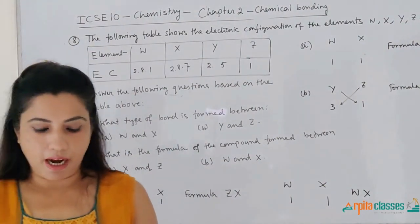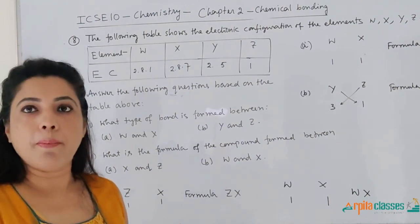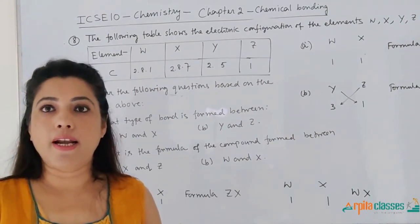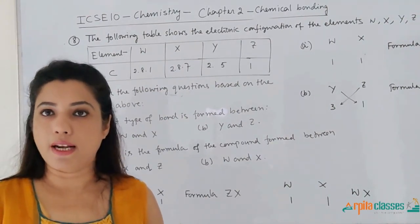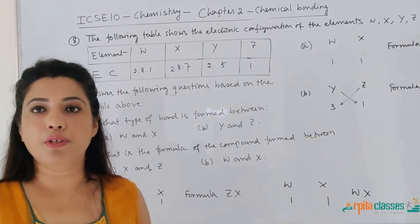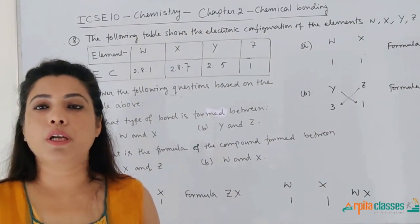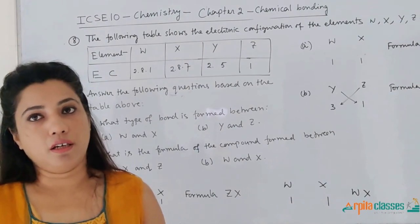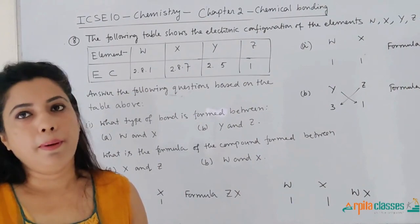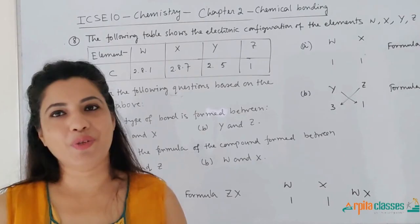This is the type of questions asked from the chapter Chemical Bonding. Apart from application-based questions, there are definitions you need to prepare: electrovalent bond, electrovalent compound, covalent bond, covalent compound, conditions for formation of both bond types, definition of dative bond, and differences between electrovalent and covalent compounds. That is it for today. Let us meet in the next video. Stay tuned. Thank you so much.